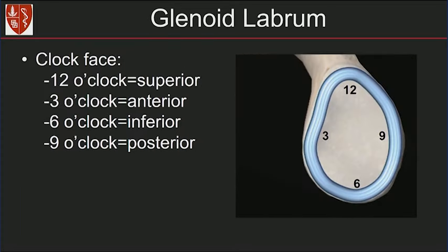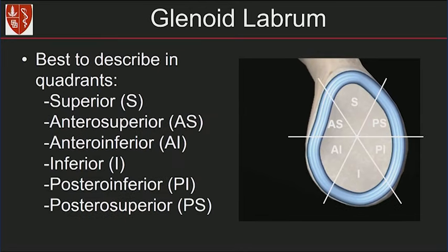The clock face has been described to describe the glenoid labrum: 12 o'clock is superior, 3 o'clock is anterior, 6 o'clock is inferior, and 9 o'clock is posterior. In our practice, we find it's best to describe labral pathology according to quadrants: superior, antero-superior, antero-inferior, inferior, postero-inferior, and postero-superior quadrants.